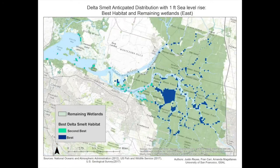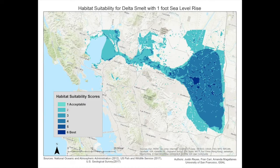Specifically, the area adjacent to Webb Tract, Bethel Island, Mandeville Island, and Holland Tract may be the best Delta smelt habitat in 30 years. Delta smelt may also inhabit adjacent sloughs, channels, and tributaries as well. These meandering sloughs, channels, and tributaries may prevent saltwater intrusion and can sustain freshwater outflow for Delta smelt to inhabit.